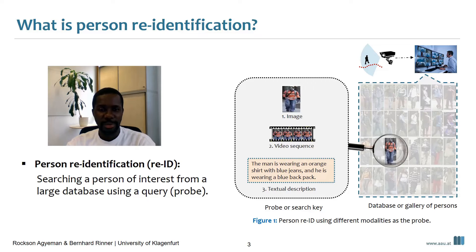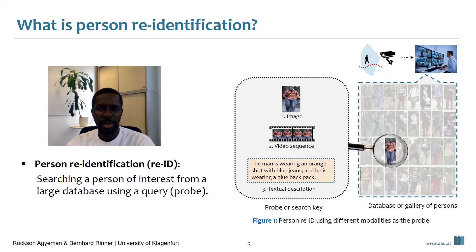What is person re-identification? Person re-identification is a domain of content-based image retrieval and it is defined simply as searching a person of interest from a large database using a query, also sometimes referred to as a probe.